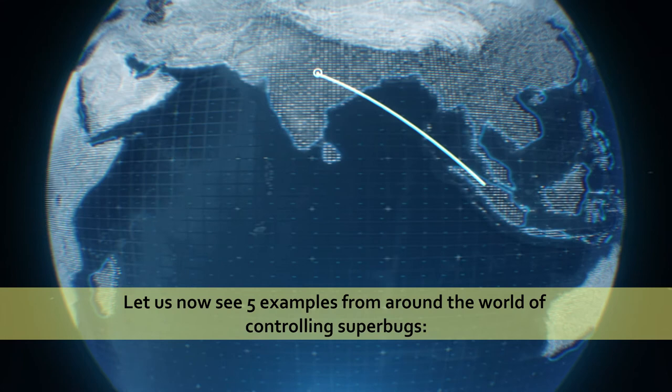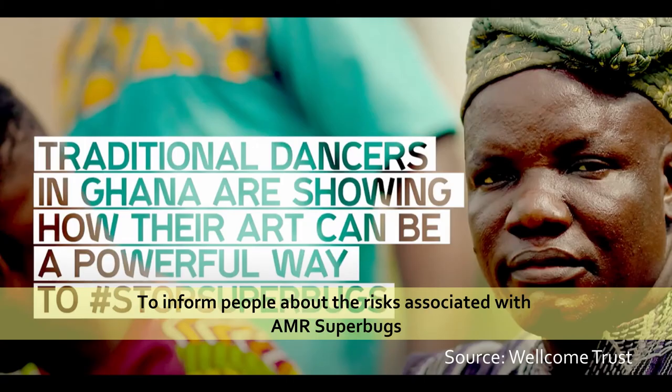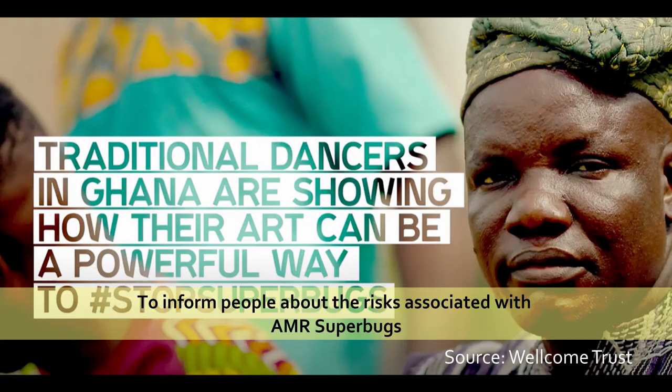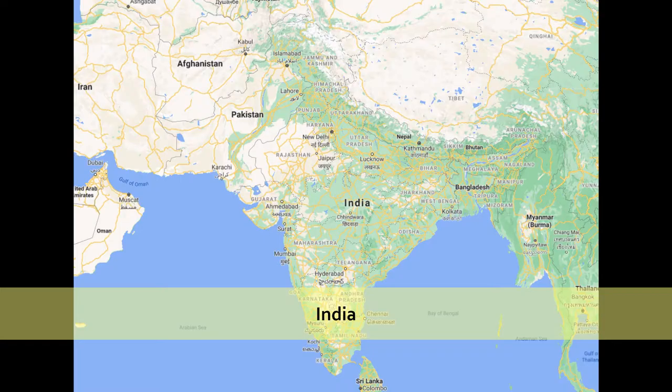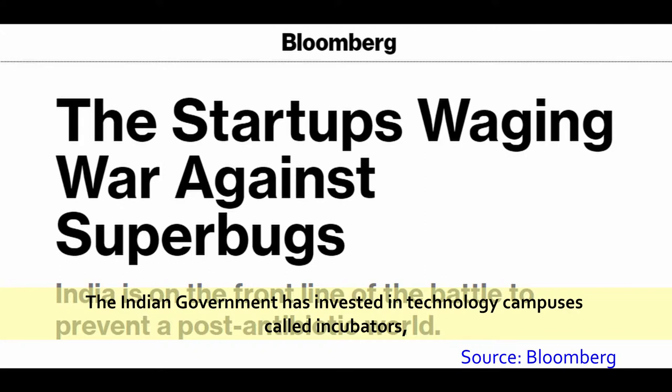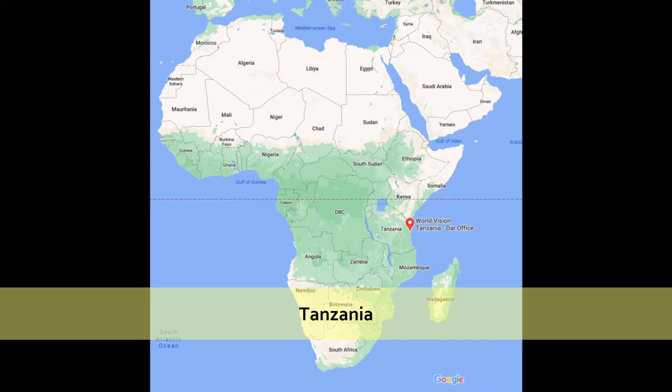Let us now see five examples from around the world of controlling superbugs. In Ghana, to inform people about the risks associated with AMR, the government commissioned their national dance company to choreograph a traditional dance about good antibiotic stewardship. In India, the government has invested in technology campuses called incubators, which provide companies with state-of-the-art equipment and facilities.